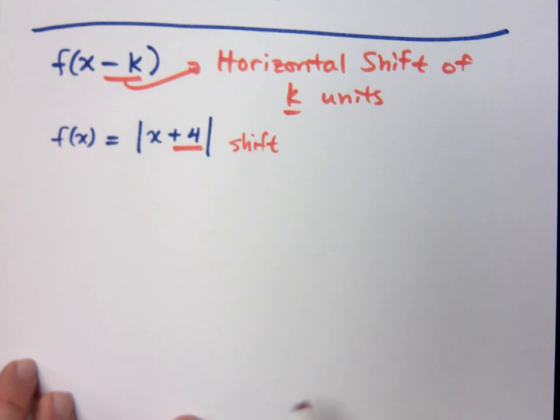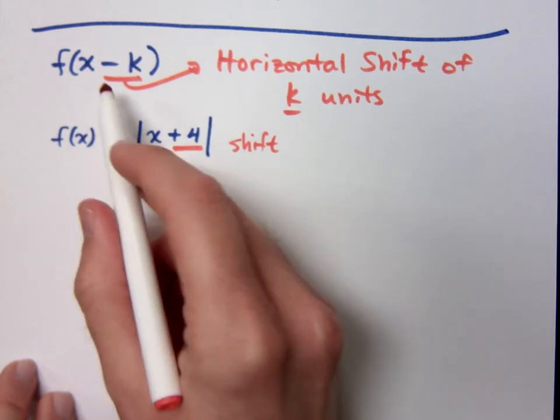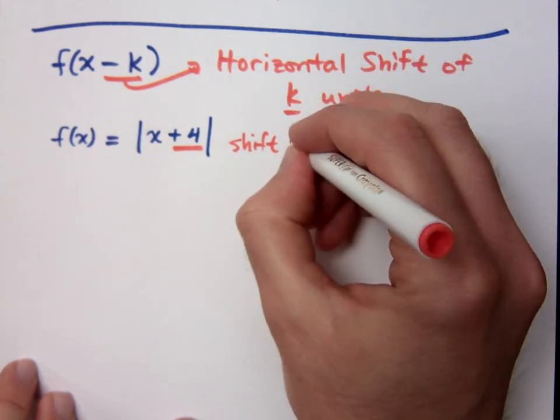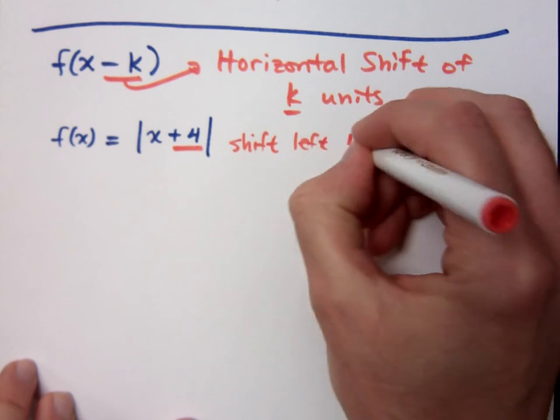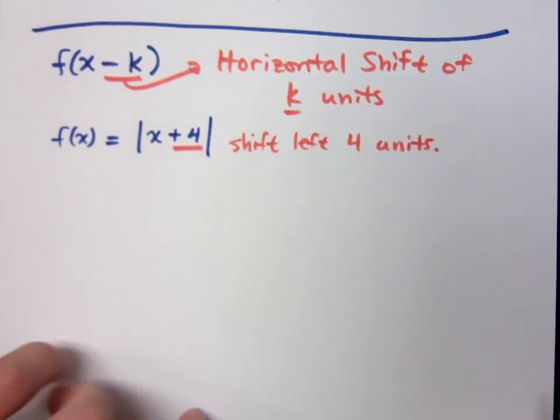So if I do this, this means I'm going to shift which direction? To the left 4. Right, I see a positive 4, but since this form has a minus k, it's going to be shift to the left 4 units.